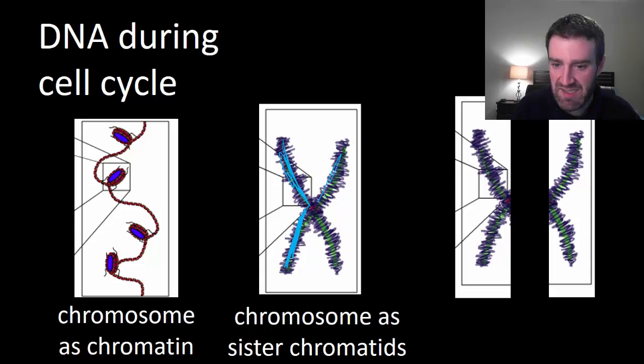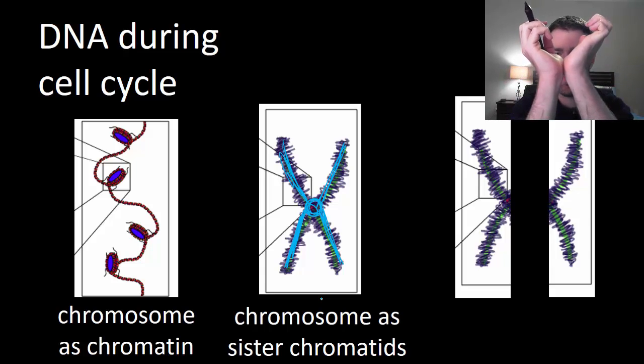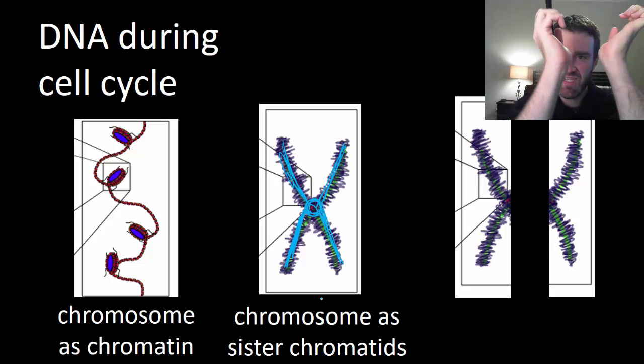We call those sister chromatids to each other because they should be identical copies. We want to tie them as identical copies, as we'll see in just a minute, because then when we split it up we can send one copy to one future cell and the other copy to the other cell.